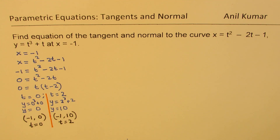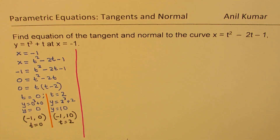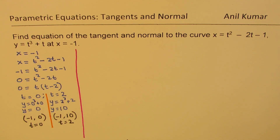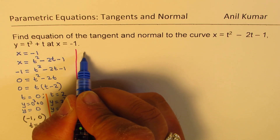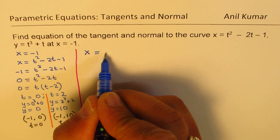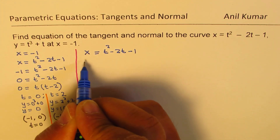This is very important to understand before we find the derivatives. If you are given a point directly, all of this is not required. Now let's find the derivative. The idea here is to find dx/dt. We have x equals t squared minus 2t minus 1.